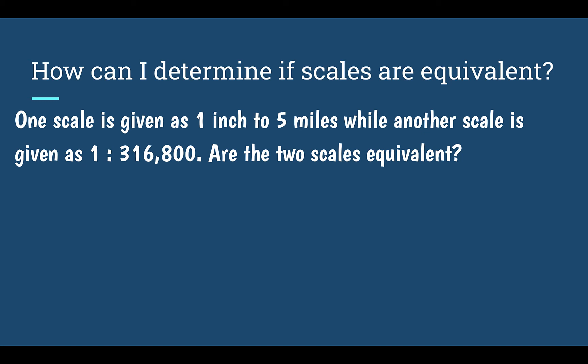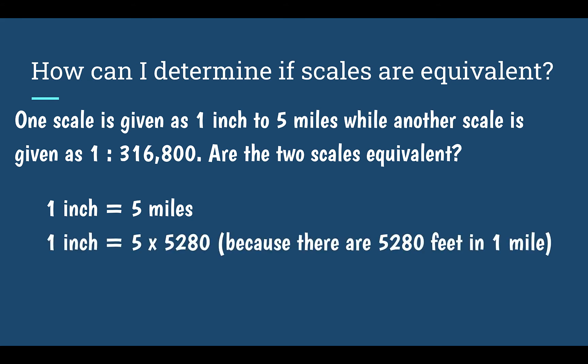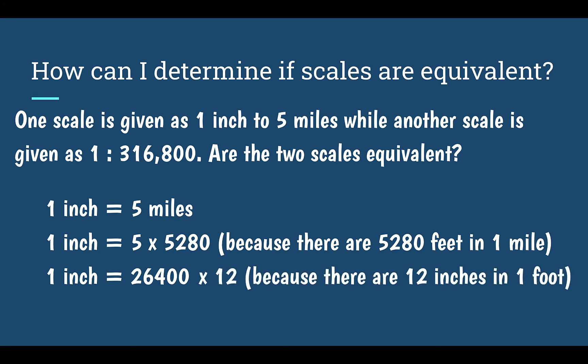Let's check a different example. One scale is given as one inch to five miles, while another is given as one to 316,800. You might think there's no way these are equal, but we have to convert units to figure that out. Starting with one inch equal to five miles, I'll change miles into feet: five times 5,280 — because there are 5,280 feet in one mile — gives me 26,400 feet.